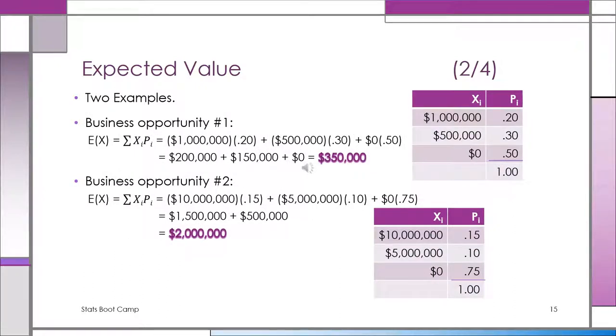Let's look at these two business deals. Business opportunity one: You have a 20% chance of making a million, a 30% chance of making 500,000, and a 50% chance of making zero.